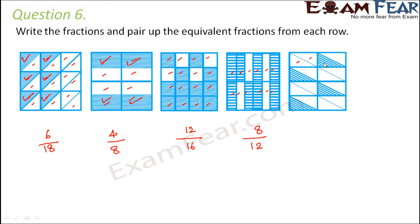In this case again we have triangles: 1, 2, 3, 4, 5, 6, 7, 8, 9, 10, 11, 12, 13, 14, 15, 16. And out of these, only 4 triangles are shaded.